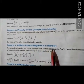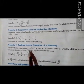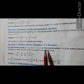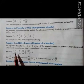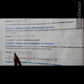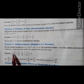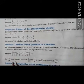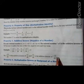Property 7: additive inverse, also called the negative of a number. For any rational number a, a plus (minus a) or minus a plus a equals to 0. The rational number minus a is the additive inverse of a. For example, minus 11 upon 18 is the additive inverse of 11 upon 18. If a number is negative, its additive inverse is positive, and vice versa. On adding a number and its additive inverse, we always get 0.